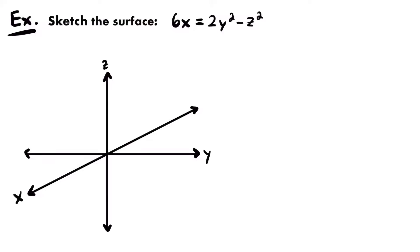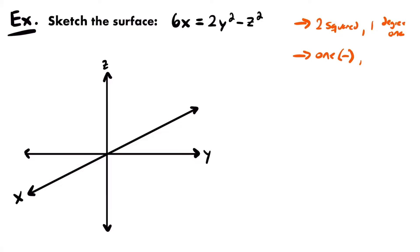The way we determine which paraboloid this represents is by looking at the signs of the squared variable terms. If both were positive, we'd have an elliptic paraboloid. But in this case, one is positive (2y²) and the other is negative (-z²). So we have a hyperbolic paraboloid. We have two squared variable terms and one degree-1 variable, with one negative and one positive squared term.